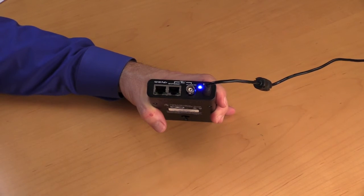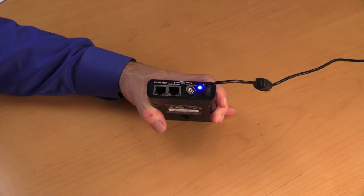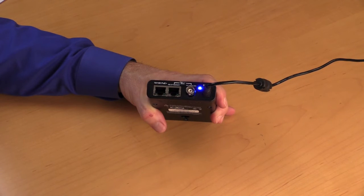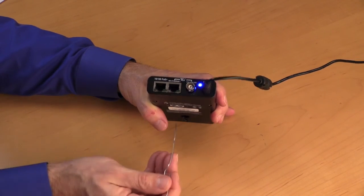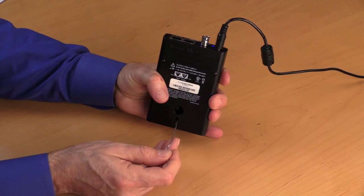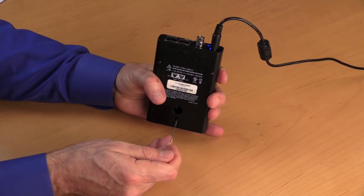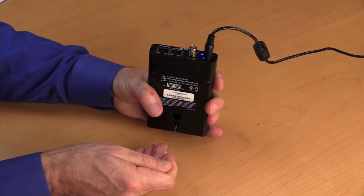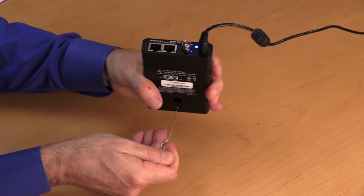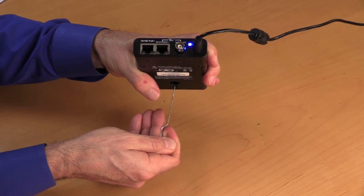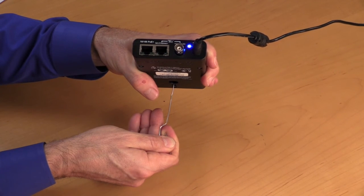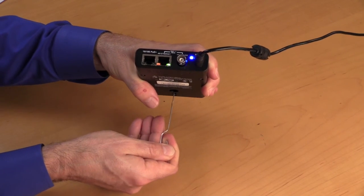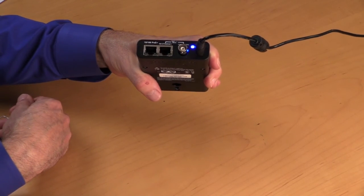Now, let's un-join this ET1801. Un-joining is basically setting the unit back to its factory settings so that you can deploy it in another network group, or set it aside for future deployment. To do that, we will again depress the join button on the bottom of the unit for approximately 13 seconds. After 13 seconds, you'll see a number of LEDs flash once on and off, and that indicates that this unit is now reset to factory settings.